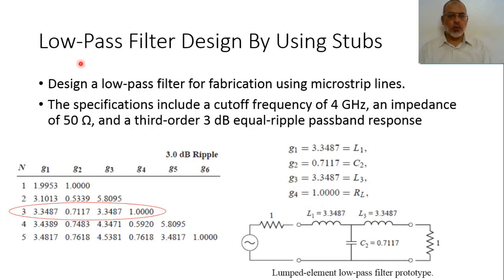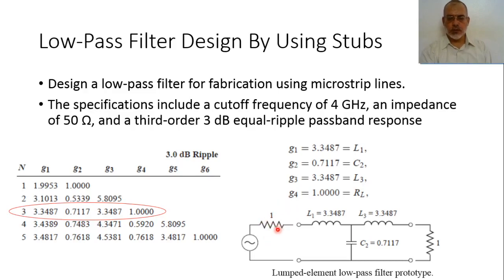For a low-pass filter, we start from a shunt L, series C, shunt L configuration. This is the lumped element low-pass filter prototype for cut-off frequency omega equal to 1 radian per second and characteristic impedance equal to 1 ohm. The second step is to transform for impedance and frequency.